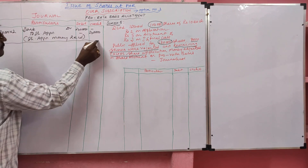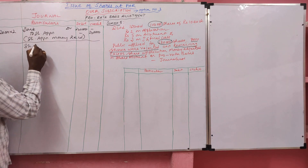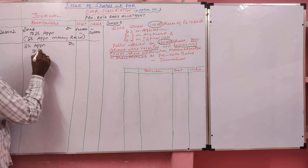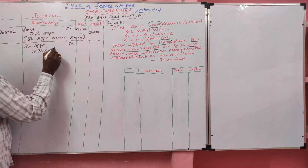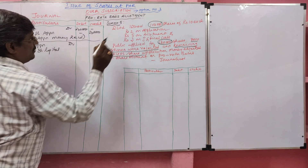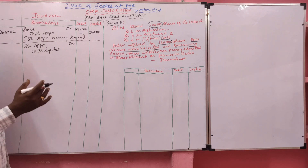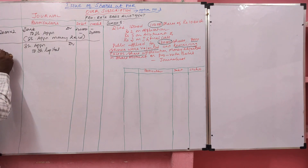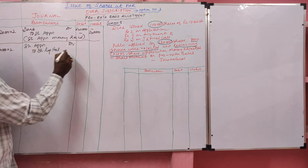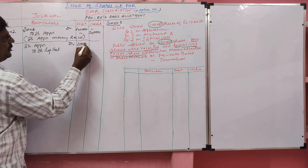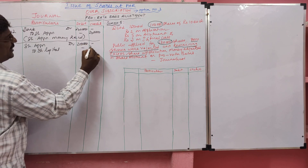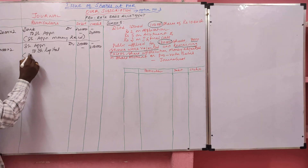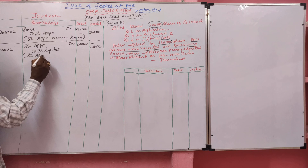Then we should transfer the share application money to the share capital account. We cannot transfer more than the issued shares. So 1,00,000 × Rs. 2 = Rs. 2,00,000 transferred to capital. Narration: Share application money transferred to share capital.